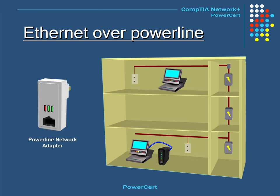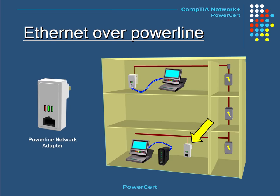To use Ethernet over Power, you need a couple of power line adapters. These plug directly into a power outlet and have a built-in Ethernet port for an RJ45 connector. One adapter plugs into the power outlet next to the computer, and you connect an Ethernet cable from the computer's network port to the adapter's Ethernet port. The other adapter plugs into the outlet next to the modem or router, and an Ethernet cable connects the two. Now Ethernet data uses the building's electrical wiring to deliver networking data.